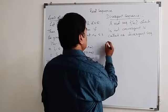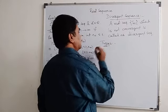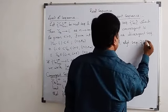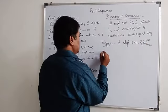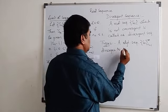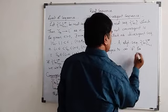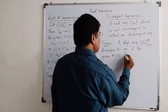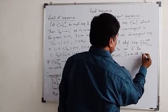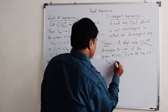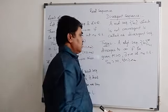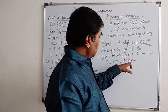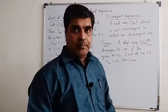Divergent sequences are classified into three classes: divergent sequences diverging to +∞, divergent sequences diverging to −∞, and divergent sequences which neither diverge to +∞ nor to −∞, called oscillatory sequences. A sequence s_n diverges to +∞ if for any given M > 0, there exists a positive integer n₀ such that s_n > M for every n > n₀. For example, if M = 10.25, then n₀ = 11; if M = 1 lakh, then n₀ = 1 lakh.